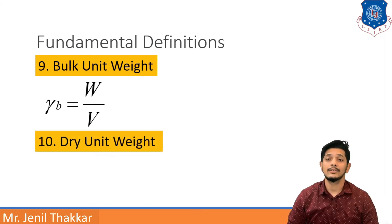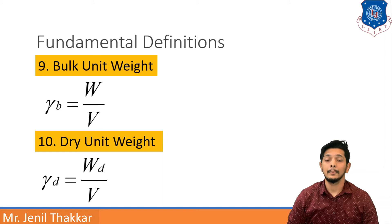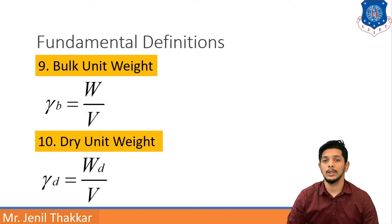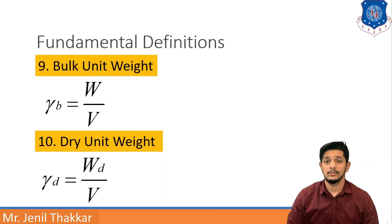The next definition is Dry Unit Weight, denoted by gamma D. Gamma D is equal to WD upon capital V, where WD means weight of dry soil solids and V is total volume. So dry unit weight is defined as the ratio of weight of dry soil to total volume. Generally, all unit weights carry units of kilonewton per meter cube.